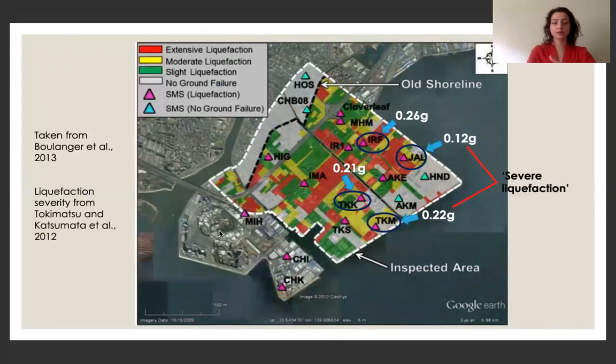So here we can see mapped areas with different levels of liquefaction. But we are actually just going to look at these stations that are circled here in dark blue. Because these are the sites which showed evidence of extensive surface liquefaction with ground failure. And these two stations in particular have been described as having experienced severe liquefaction.